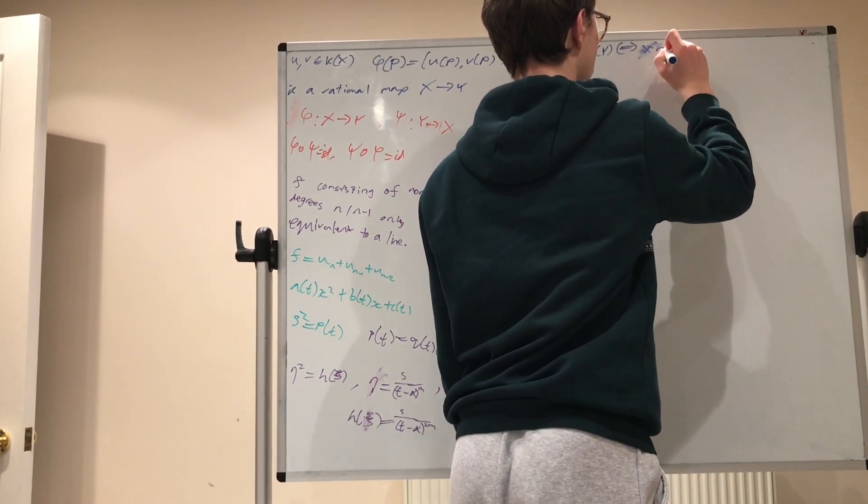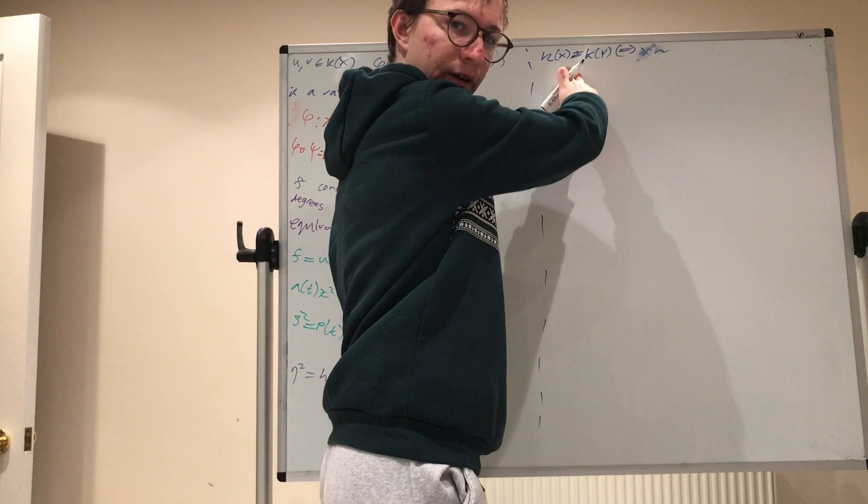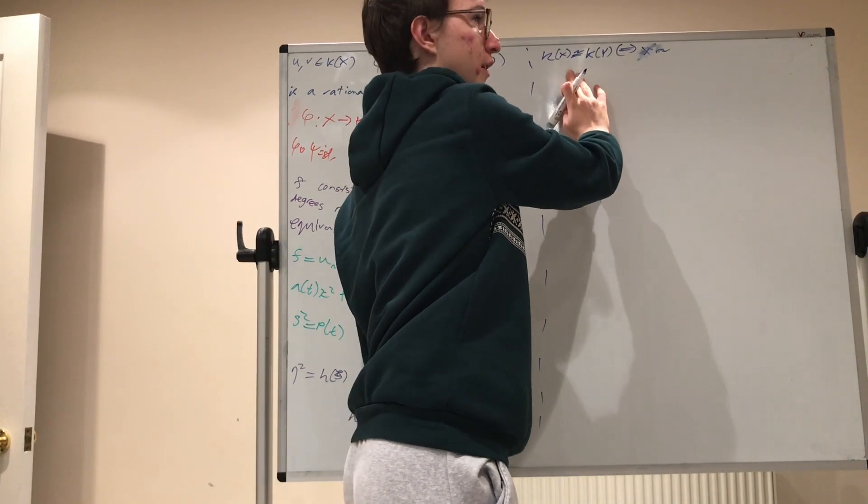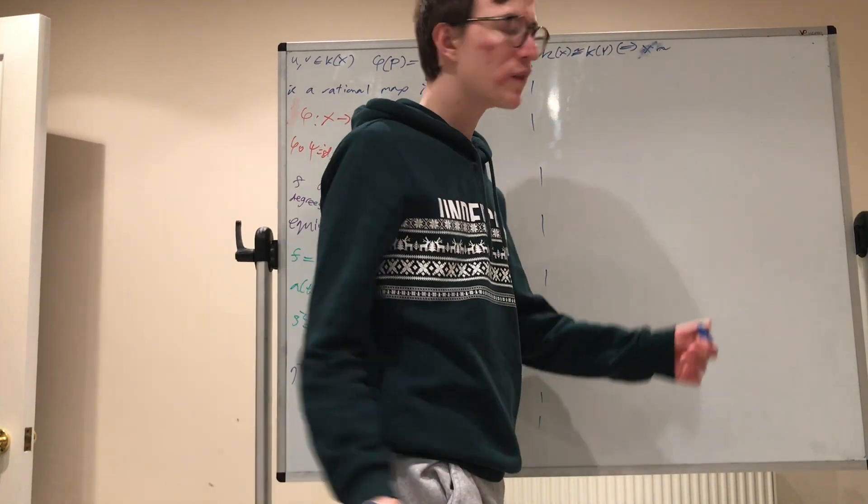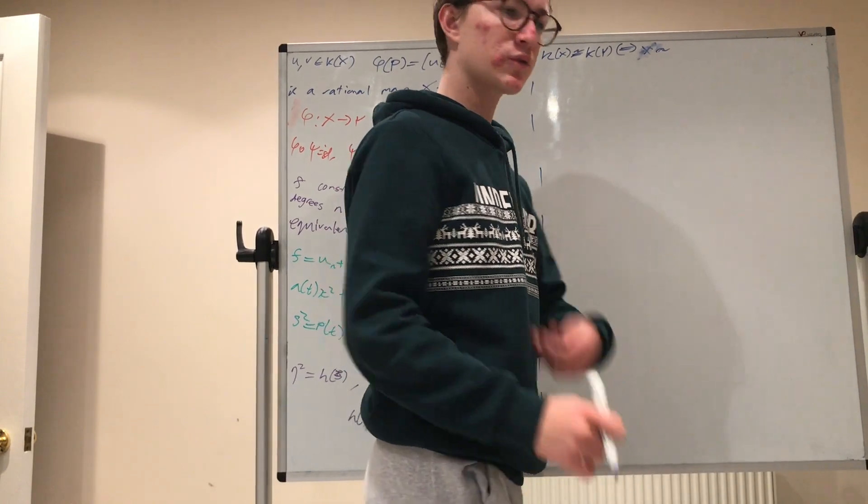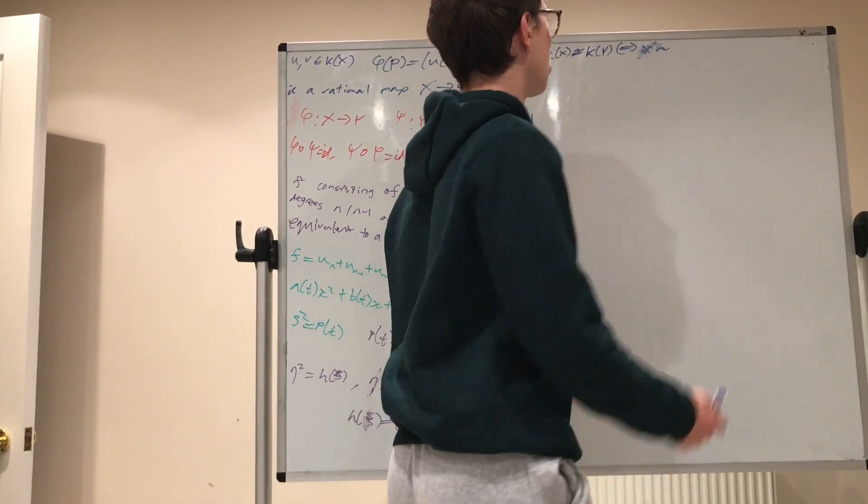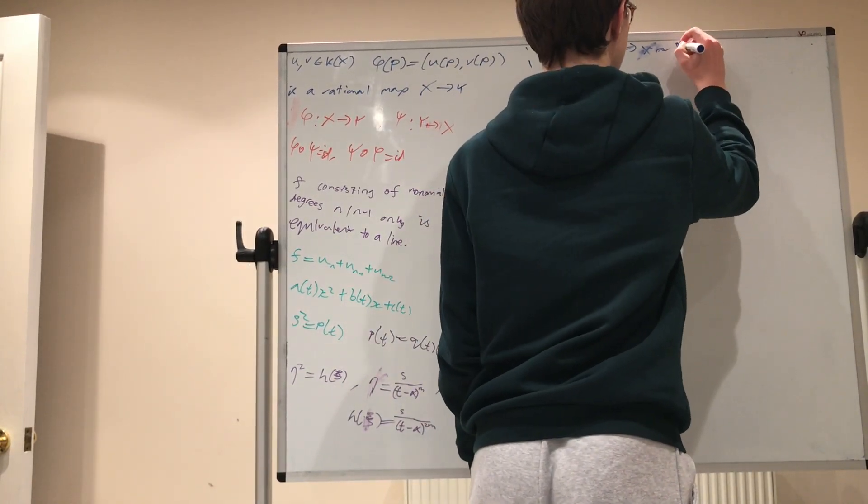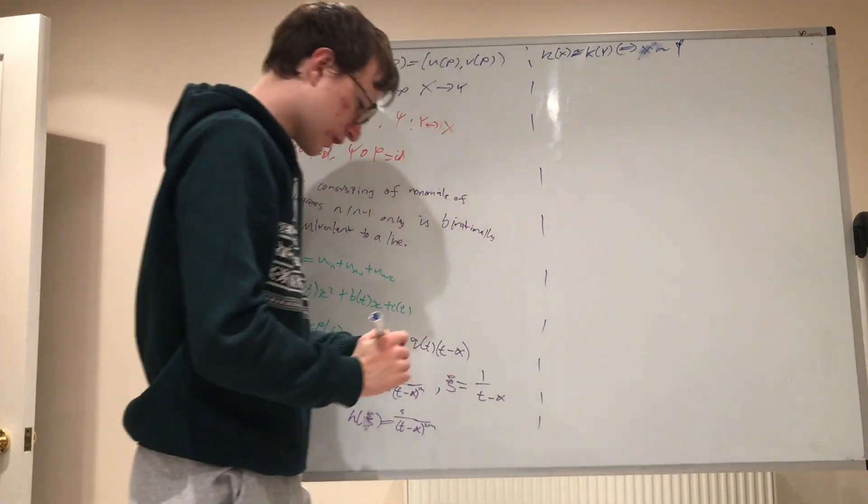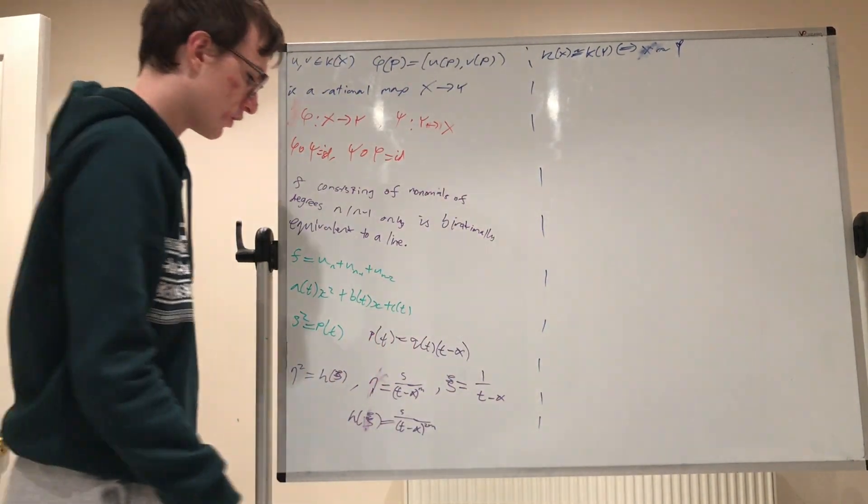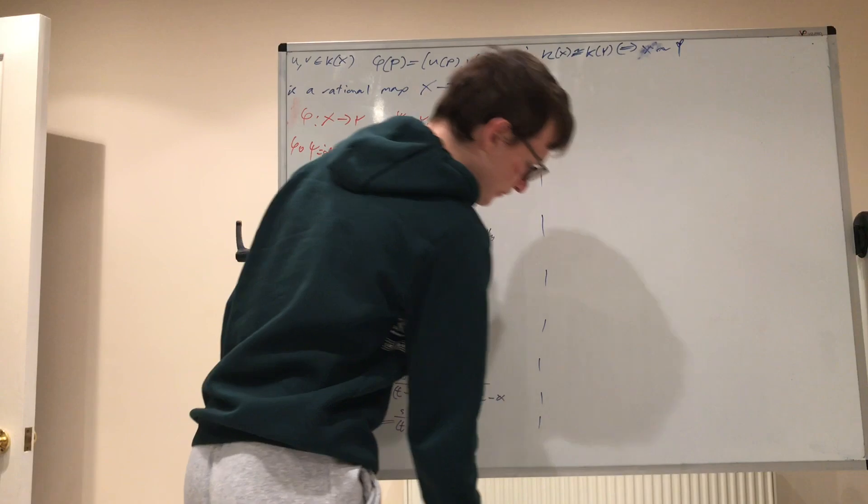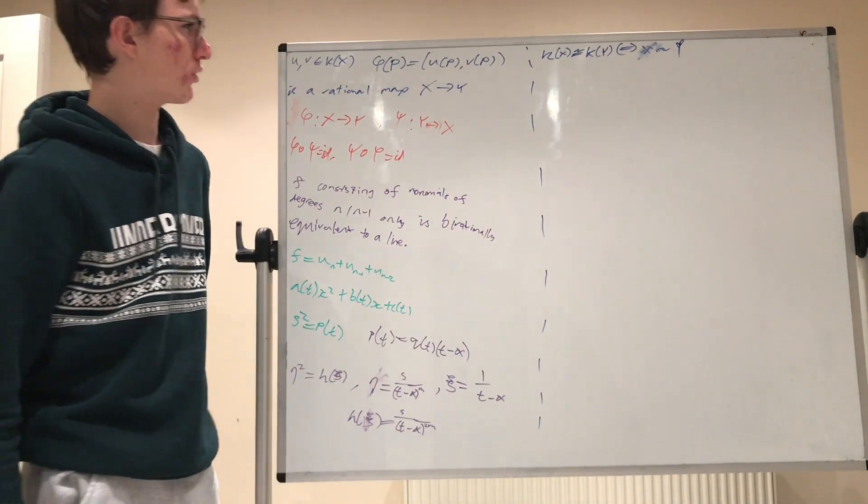And that's something that you would expect. An important invariant and an important equivalence relation, you want something like this to hold. And so, classifying curves up to birational equivalence is important in algebraic geometry.